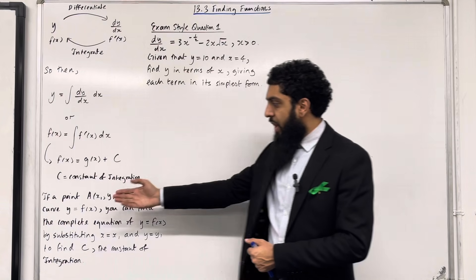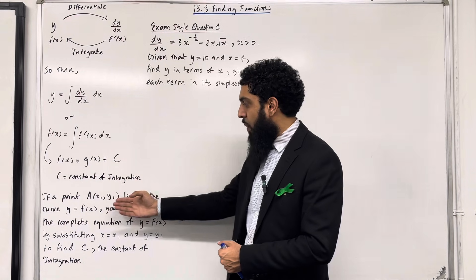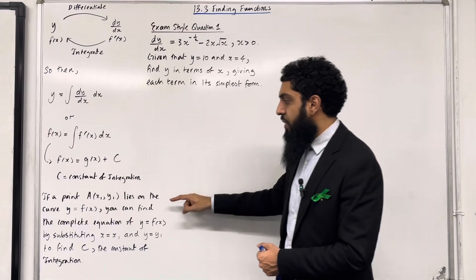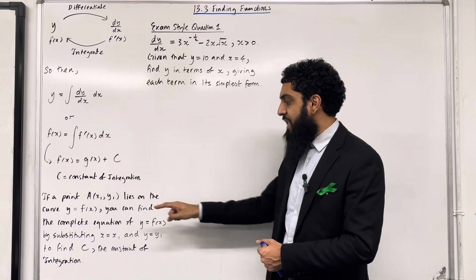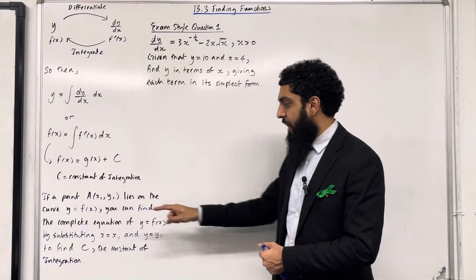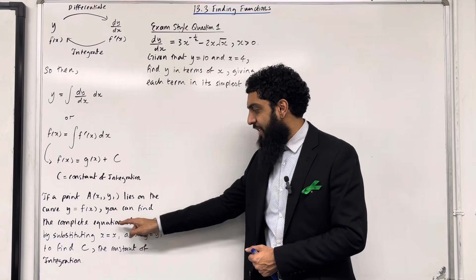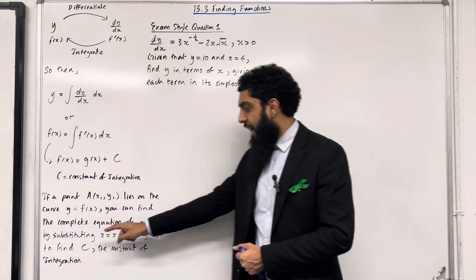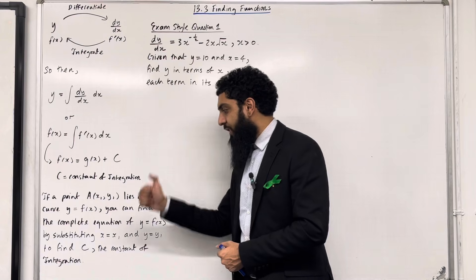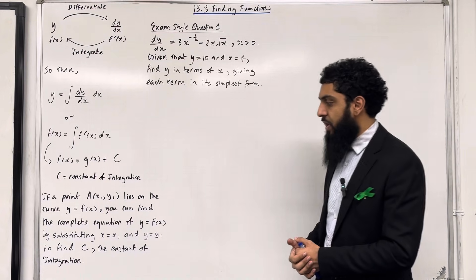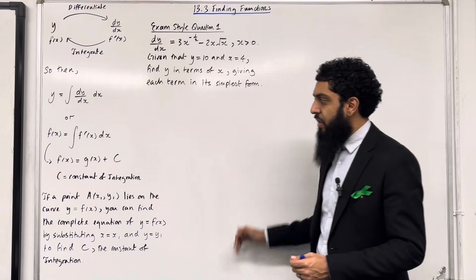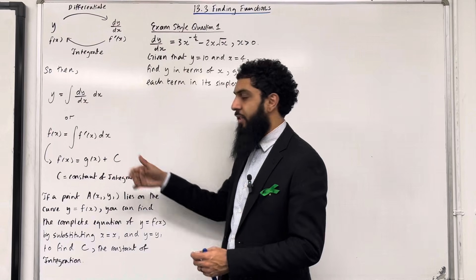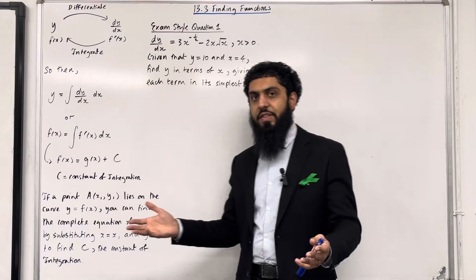Now, if a point A(x₁, y₁) lies on the curve y = f(x), you can find the complete equation of y = f(x) by substituting x = x₁ and y = y₁ to find c, the constant of integration. Once you've got c, you put it back into the function and then you get f(x) = g(x) plus your constant c.